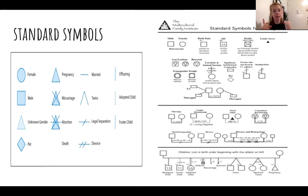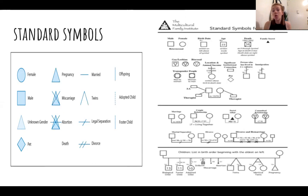When doing genograms or eco maps, you're going to be touching a lot of very sensitive areas for clients. You might want to give a disclaimer in the beginning, saying that we're going to be going over a lot of different really personal areas in your family of origin. If at any point you feel uncomfortable, please let me know and we can stop, take a break, come back to this later, or we don't have to address that area.